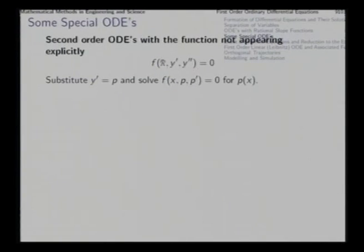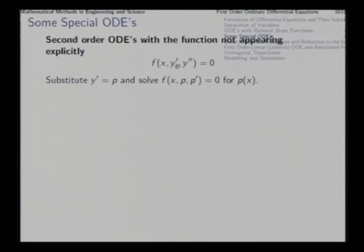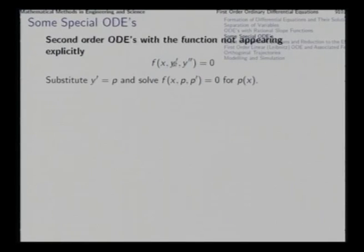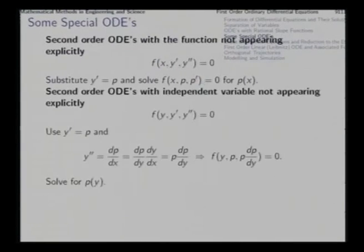One class is where the dependent variable y does not appear explicitly — it appears only through its derivatives, but y itself does not appear directly. In that situation, it is easy to reduce the equation into two first-order ODEs. Writing y' = p, we get a first-order differential equation in p, which we solve by first-order methods. After that, we set the solution equal to dy/dx and solve that as another first-order equation. At every stage we get one arbitrary constant, so finally two arbitrary constants are accumulated.